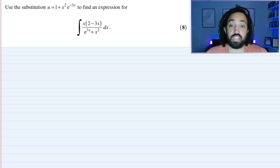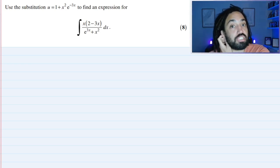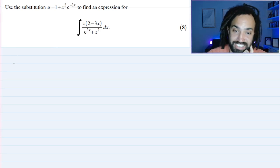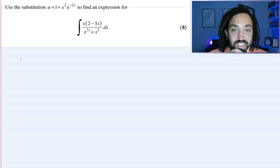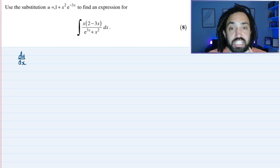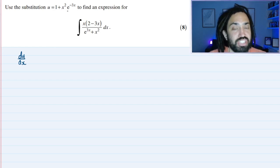Right, let's do this question. Use the substitution u = 1 + x²e^(-3x). That's tough. As always, what I would do is differentiate the substitution. There's no tricky parts to differentiate there, no square roots.